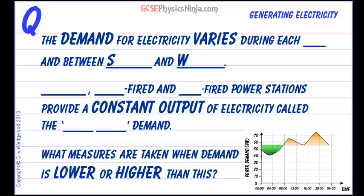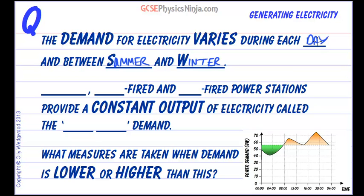The demand for electricity varies through each day and through the year between summer and winter. For example, in winter more people use electric fires to keep warm. At night we're all asleep and don't use electrical appliances, whereas in the morning we all switch on our kettles, so the electrical power required from power stations needs to be higher in the morning.